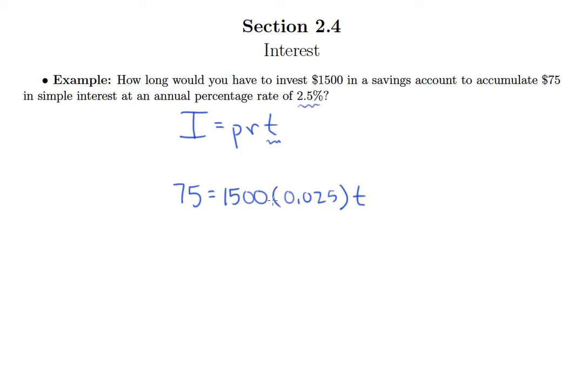So we need to do a little bit of simplifying before dividing, so we'll multiply 1,500 by 0.025. Forgive my diagonal looking work here, it's a little bit sloppy. With three decimal places, we end up with 75 equals 37.5 T.